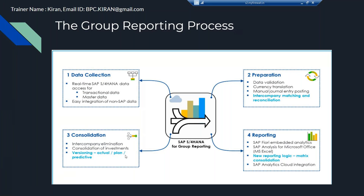The total course content is divided into four parts. Today we discuss the entire course content overview. The first part is data collection. For any system — FI, CO, MM, PP, or group reporting — first we have to collect the master data. Earlier in FI implementation, we used to collect requirements, create blueprints, then create company codes, chart of accounts, field status variants, posting period variants, and all those configurations.